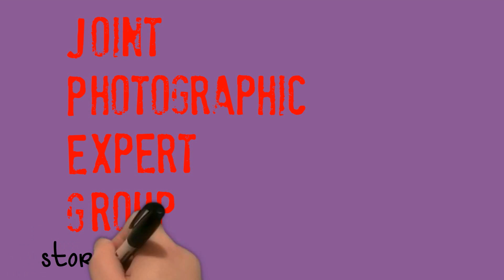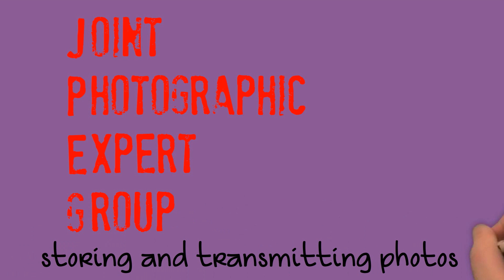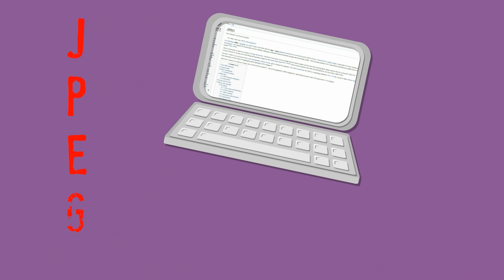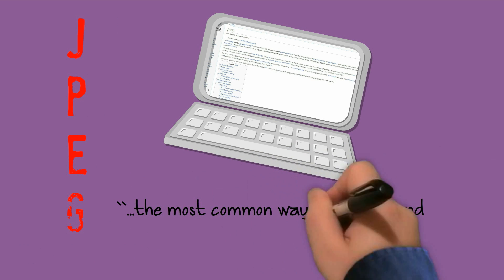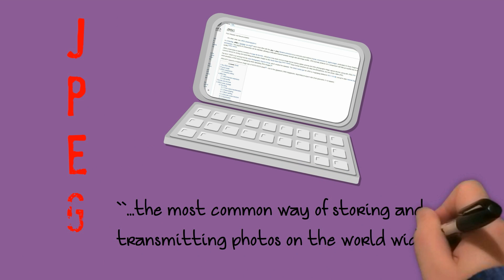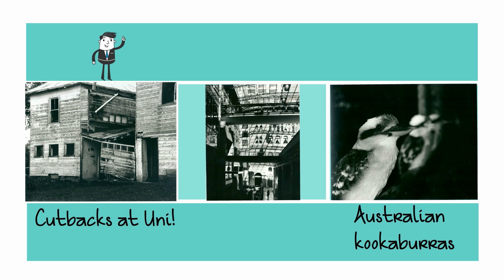JPEG stands for Joint Photographic Expert Group, and it's a way of storing and transmitting photos. According to Wikipedia, it's the most common way of storing and transmitting photos on the World Wide Web. I'm going to be explaining JPEG for black and white photos today because it's easier to explain, but everything I say basically applies for colour.